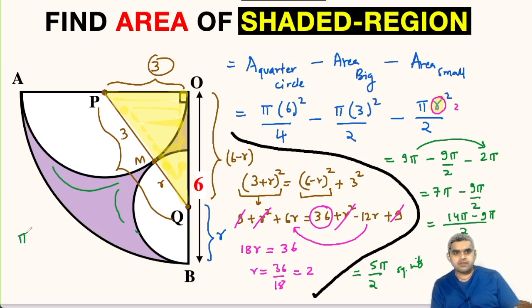If you want, you can further substitute π as 22 divided by 7 or 3.14 and you can find the value in decimals.